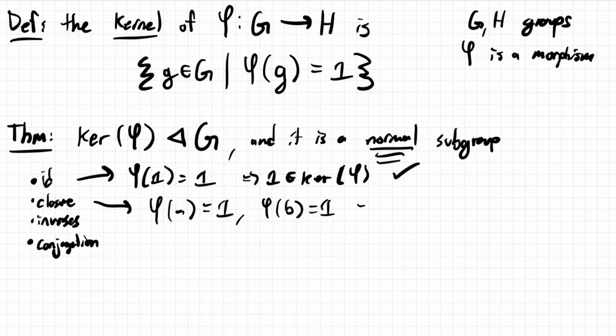that'll mean that phi of ab equals phi of a times phi of b, which is one times one